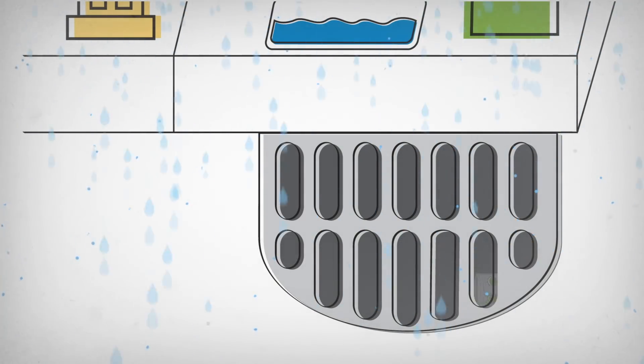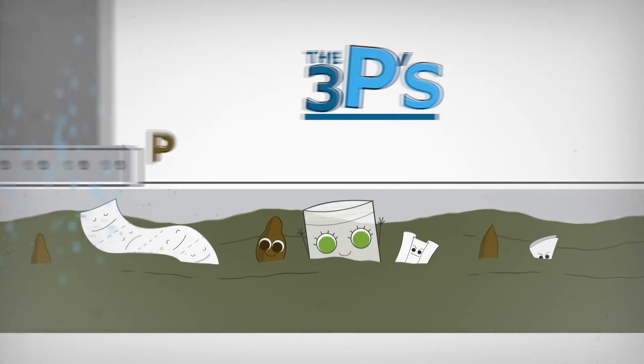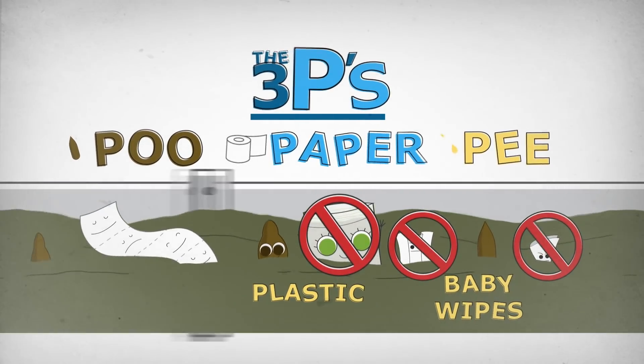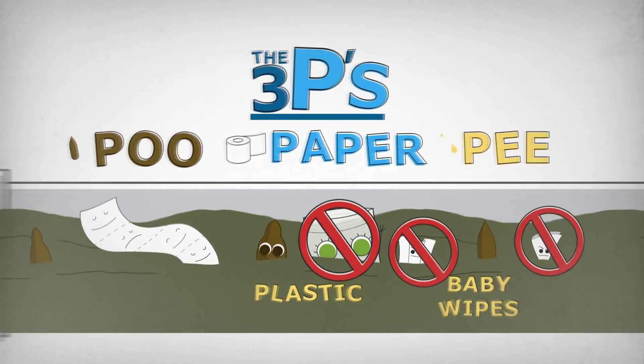Anything other than the water and the three P's—poop, paper, and pee—can be a problem for the sewer. That's why it's important to keep all trash out of our drains.